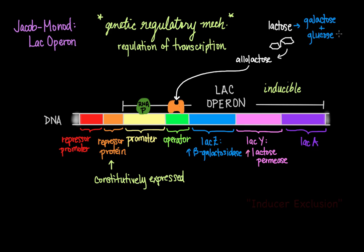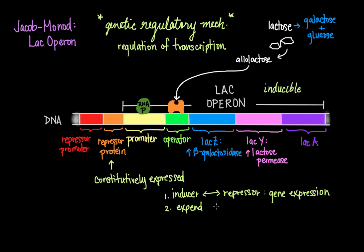There are two key takeaway points from the LAC operon model. First, it is the interaction between the inducer and the repressor molecules that mediates gene expression. Second, the cell expends energy to make enzymes only when necessary — there are inducible genes whose transcription is induced when a particular molecule is present.